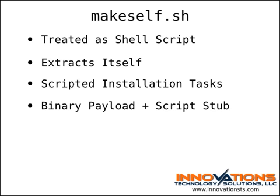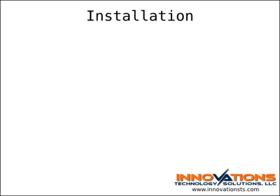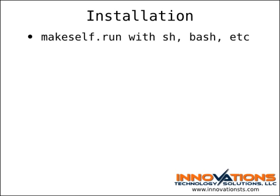The stub then runs any predefined commands via a script specified at the time the archive is created. This model offers a lot of flexibility, and can be used not only for installing scripts and software, but also for things like documentation. The makeself.sh script is itself packaged as a self-extracting archive when you download it. You can extract the script and its support files by running the makeself.run installer with a Bourne-compatible shell.